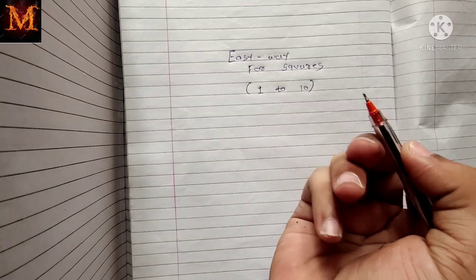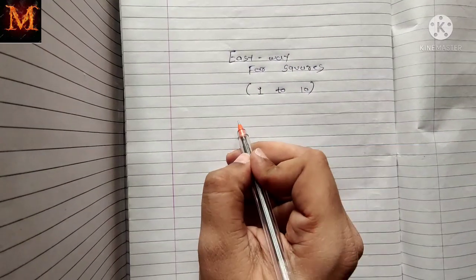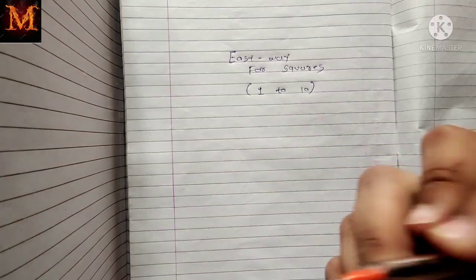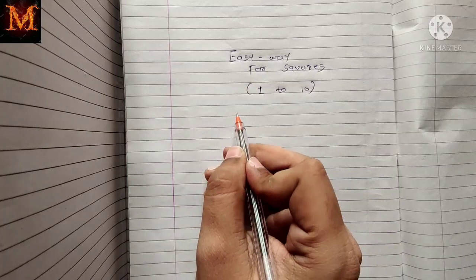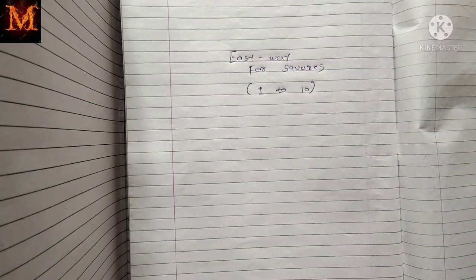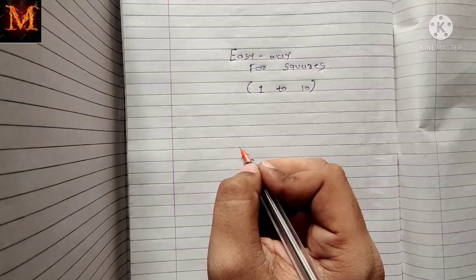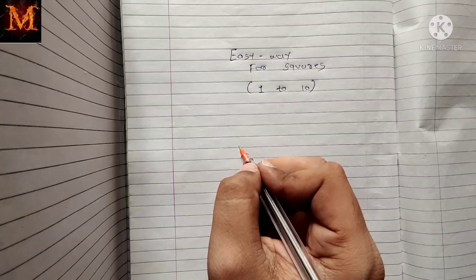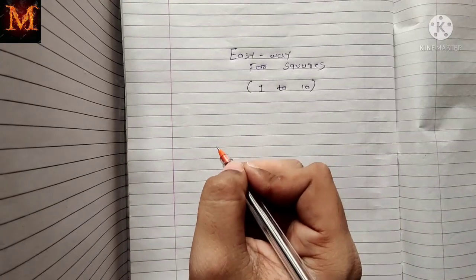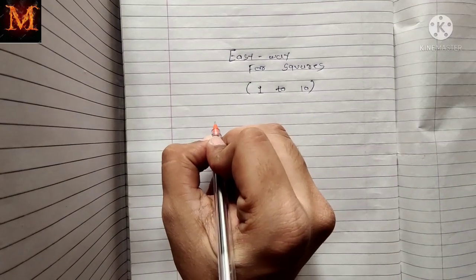Now let me show you how to write the squares from 1 to 10 using this method. But first, make sure to subscribe to the channel, because in the next video I am going to teach you how to remember squares from 11 to 20, using a different method, which is also very easy.